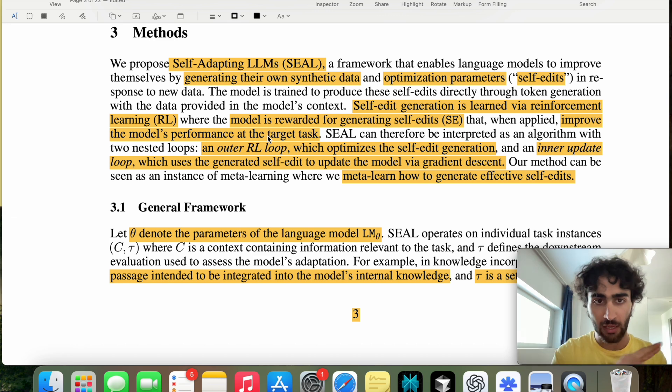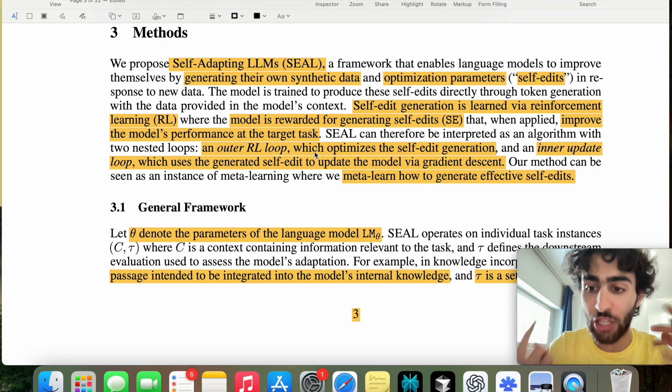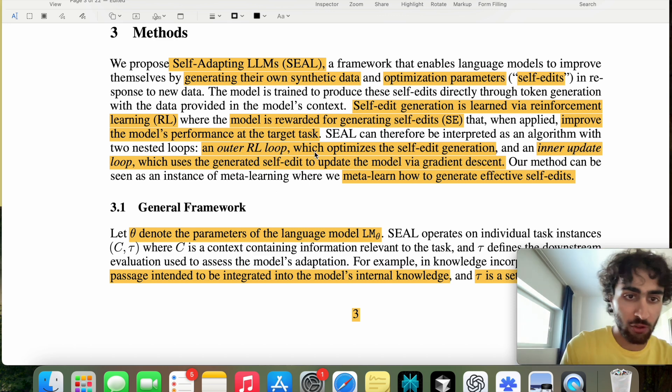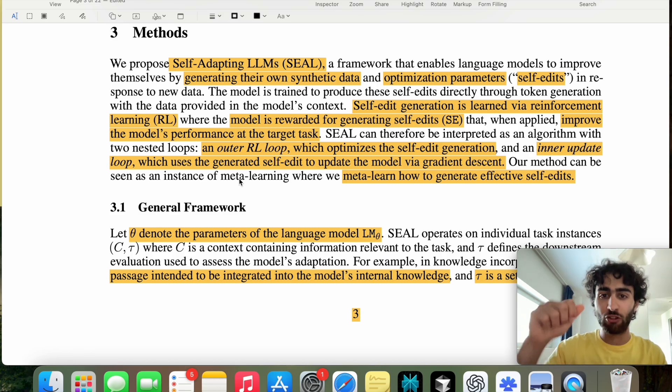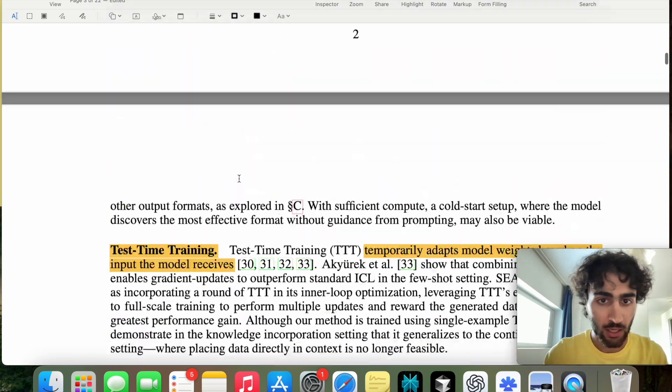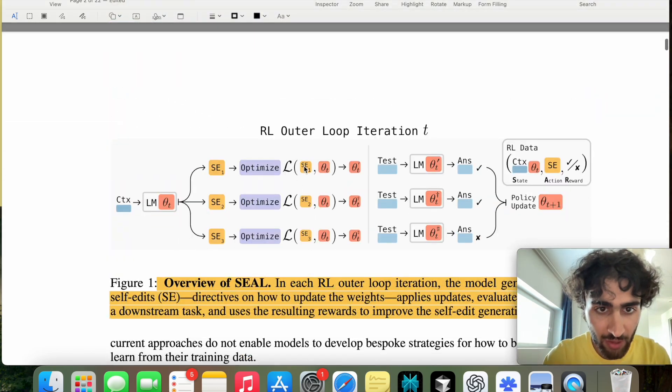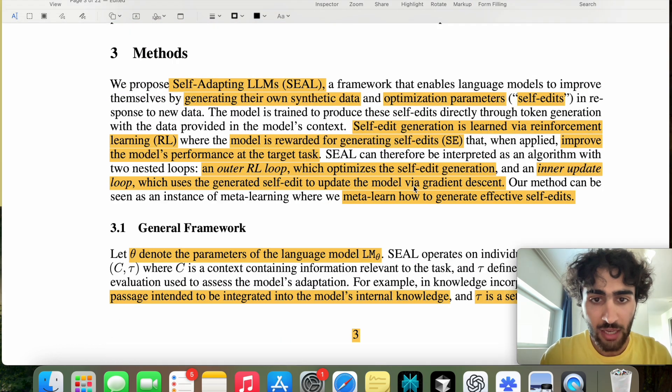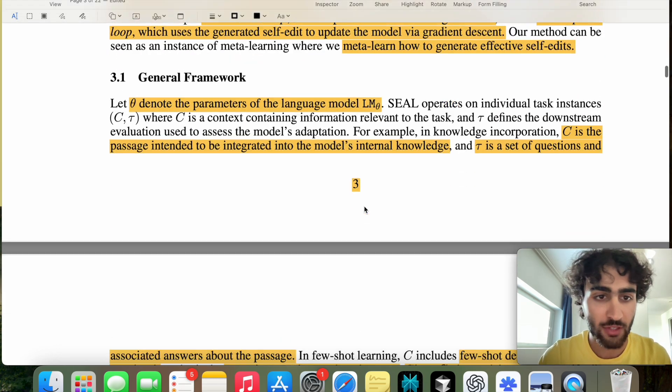If you don't know what these mean, then we will explain it at that point. There's two nested loops. There's an outer RL loop, which optimizes the self-edit generation itself, and then an inner update loop, which uses the generated self-edit to update the model via gradient descent. So we update the model via gradient descent here in this optimization step, where we're updating our weights. And then in the outer loop, we improve our policy to improve our self-edit generation. And all together, we meta-learn how to generate effective self-edits.